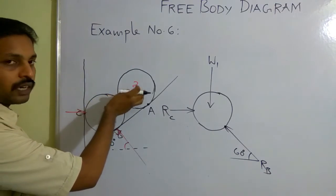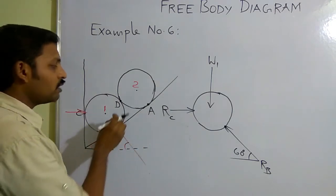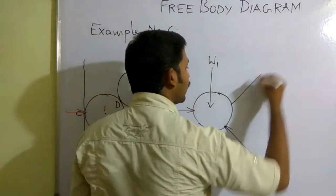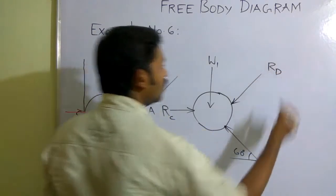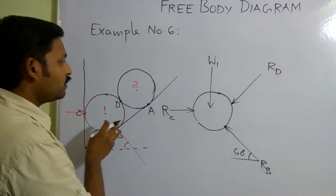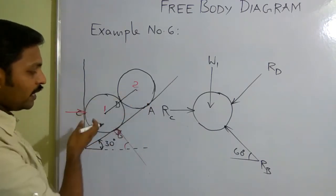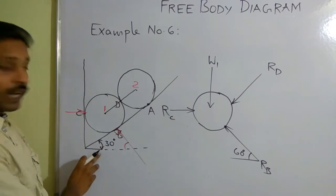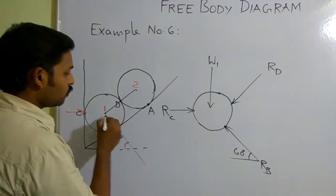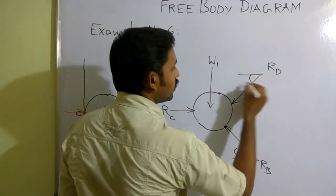Because of the existence of roller 2, roller 1 is not able to move in that direction, so you need to represent a reaction RD at contact point D. Since these two are identical rollers of the same diameter, the line joining their centers passes through point D and is parallel to the inclined surface. As the inclined surface makes 30° with the horizontal, this line also makes 30° with the horizontal, so RD acts at 30°.